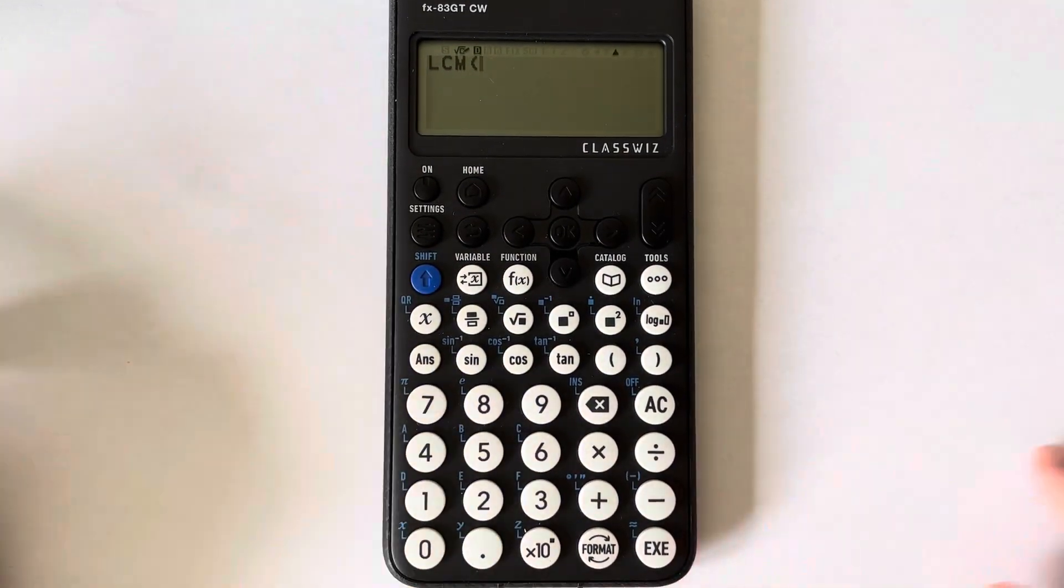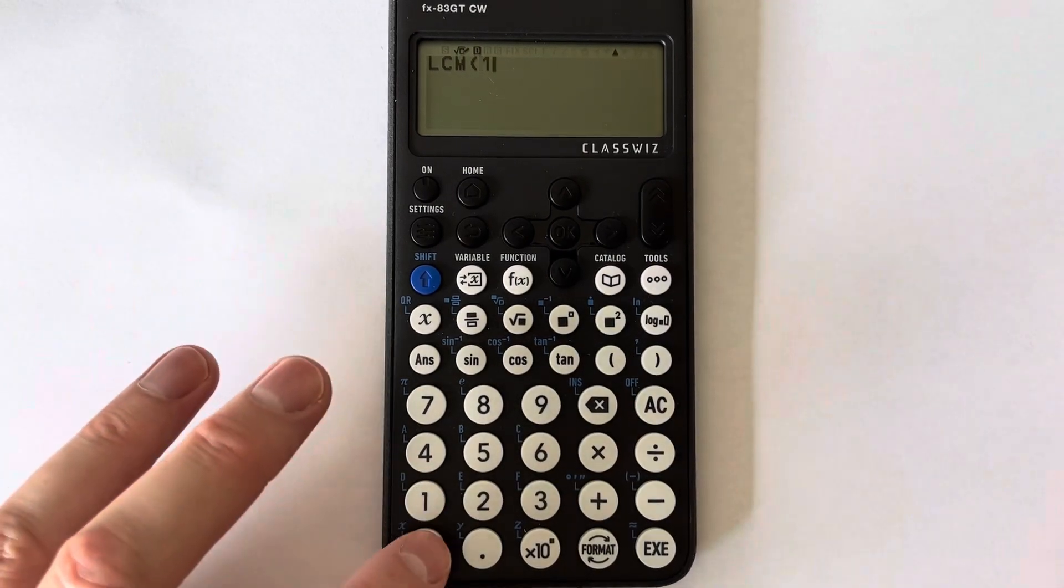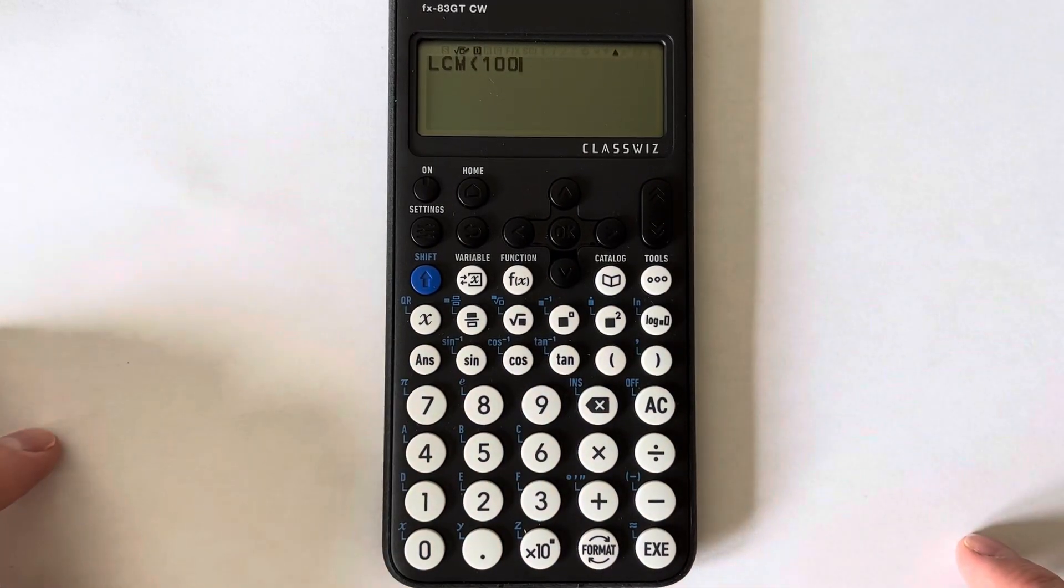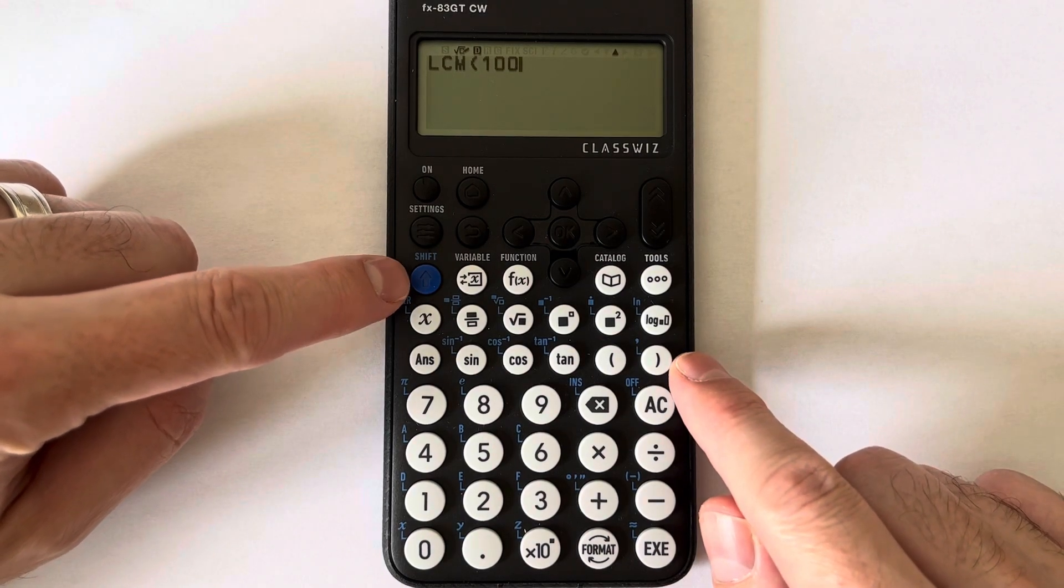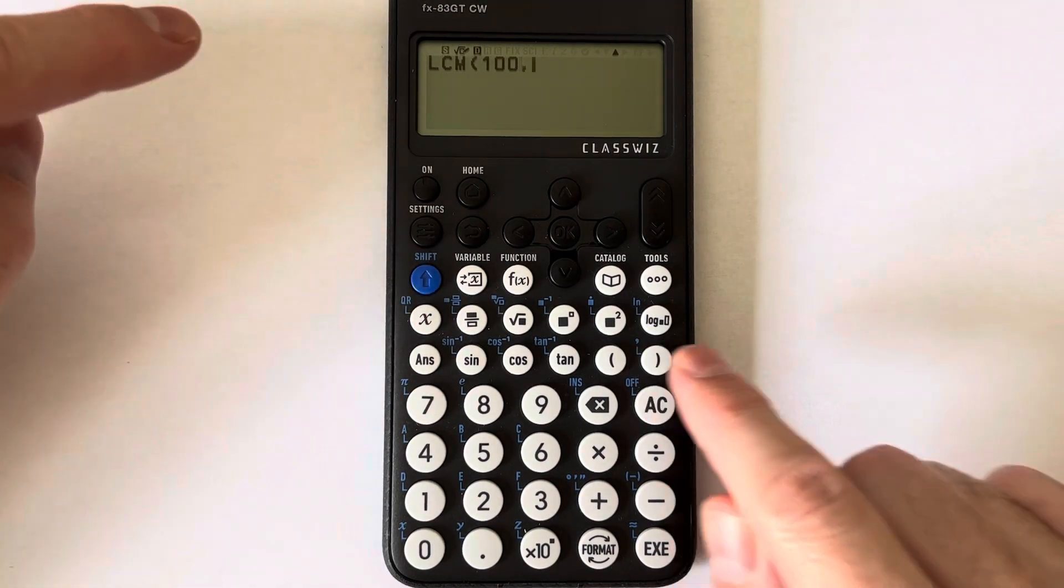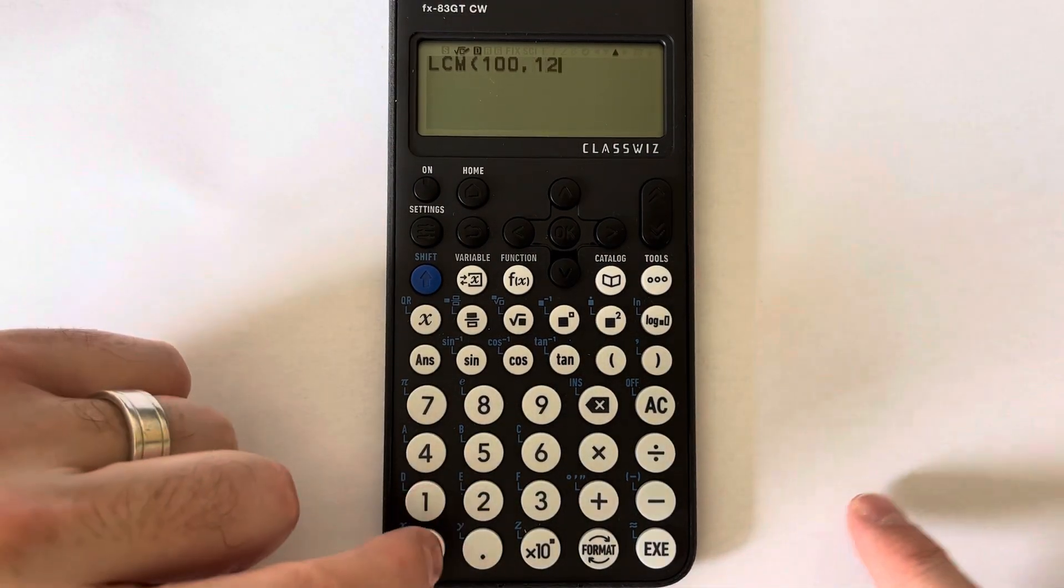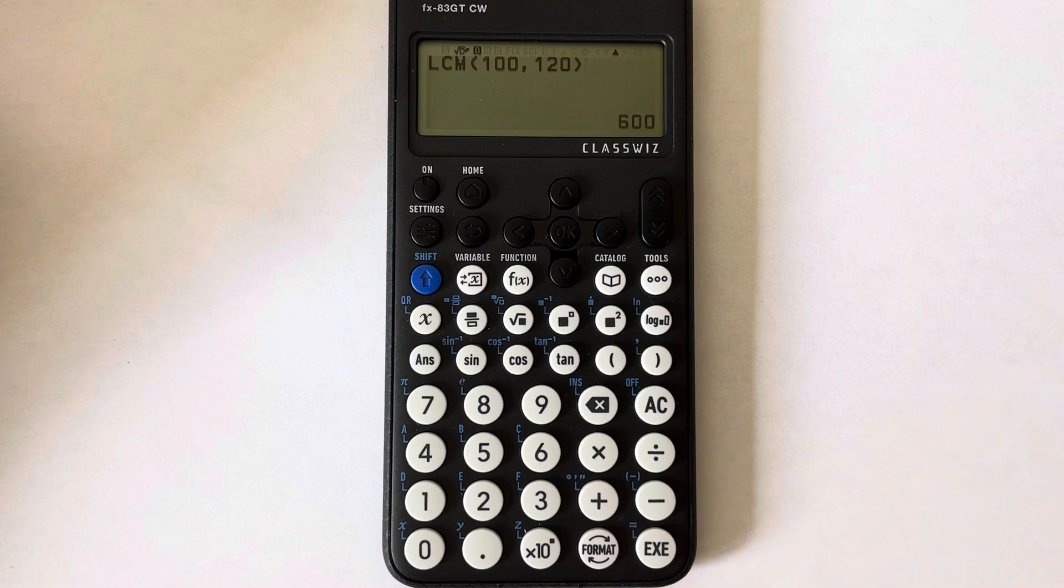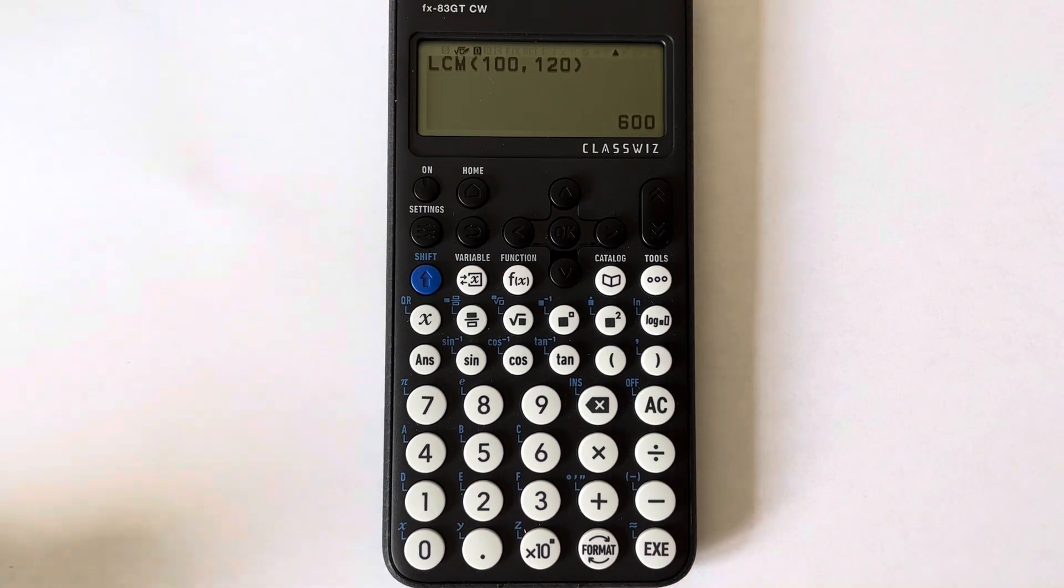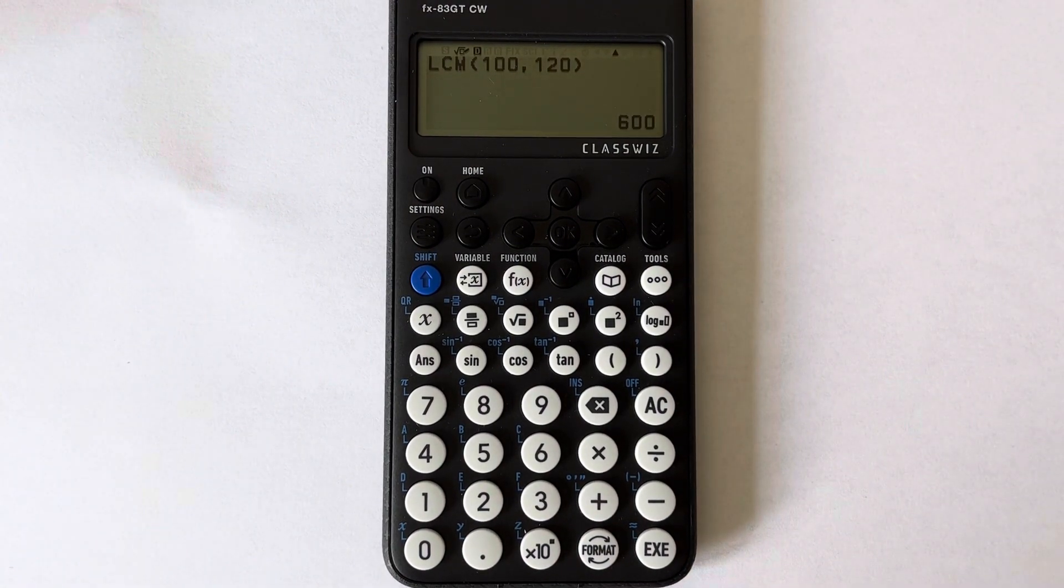Our two numbers are 100 and 120. We'll need to put a comma between the two numbers, so press shift, right bracket, then 120. Close your bracket, press the execute key, and there's the lowest common multiple, 600.